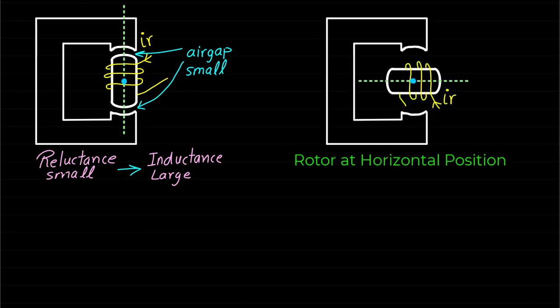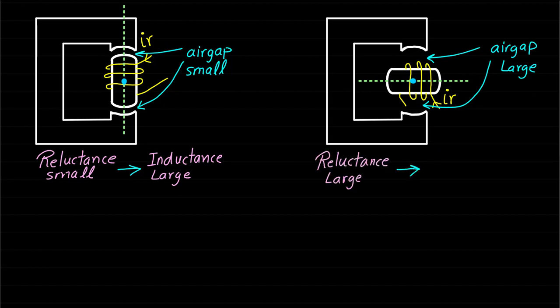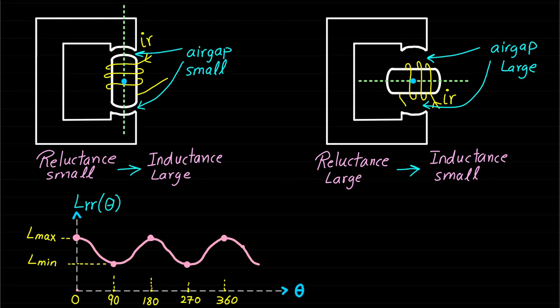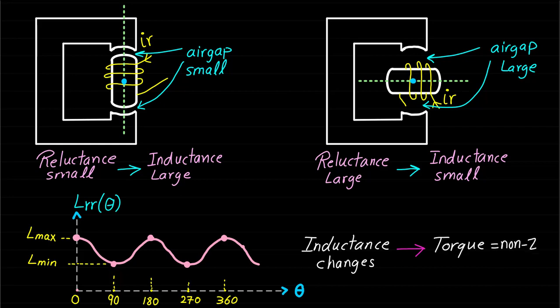When the rotor is at horizontal position, the air gap seen by the rotor magnetic field is large, the reluctance is large, and therefore inductance is small. Note that the rotor magnetic field is rotating with rotor position. If we measure and plot the rotor self-inductance, we can find that the rotor self-inductance is changing two times with respect to rotor position and can be represented as shown. As you can see, the rotor self-inductance changes and it is not constant. Therefore, we expect a torque component produced as a result of the change of rotor self-inductance. The torque component that is developed as a contribution of the change of rotor self-inductance can also be called reluctance torque.